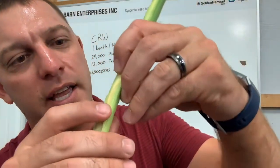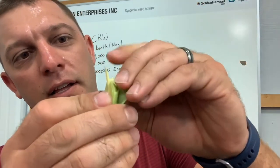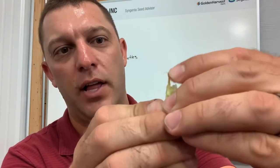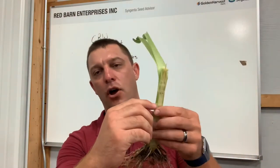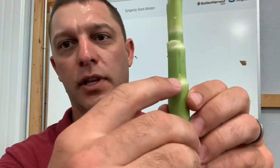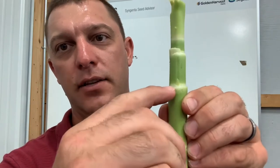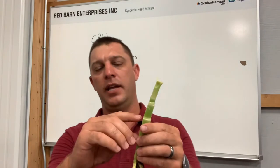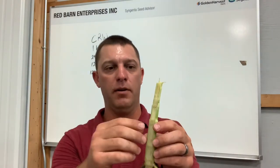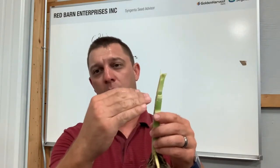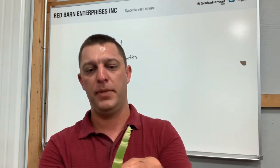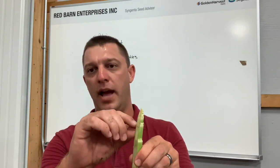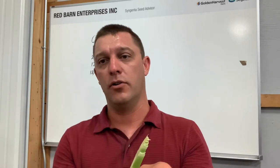You can see if you look real close right there, we have the tassel already developed inside the stalk. We're probably getting very close to determining which ear node becomes the primary ear — every node has the ability to put on a root, a leaf, or an ear. When you reach about V10, the plant is determining which of those ears will be the primary ear. So we're at V8, we've basically determined the maximum number of kernel rows, and we're moving on to determining the maximum number of kernels in length for that ear.